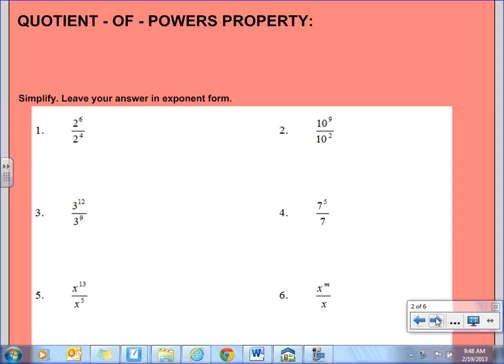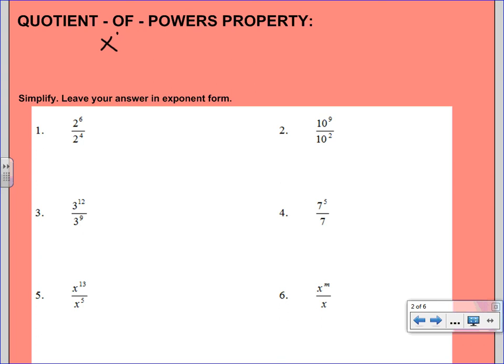We're going to start off with the quotient of powers property. Now, quotient means division. So you're going to have one base on top and that same base on the bottom. If you think about the multiplication power, when we multiplied with the same base we added. And now when we're dividing, which is the inverse operation of multiplying, we're going to subtract, which is the inverse of addition. So this ends up being x^m divided by x^n equals x^(m-n). The key phrase here is just to subtract the exponents.